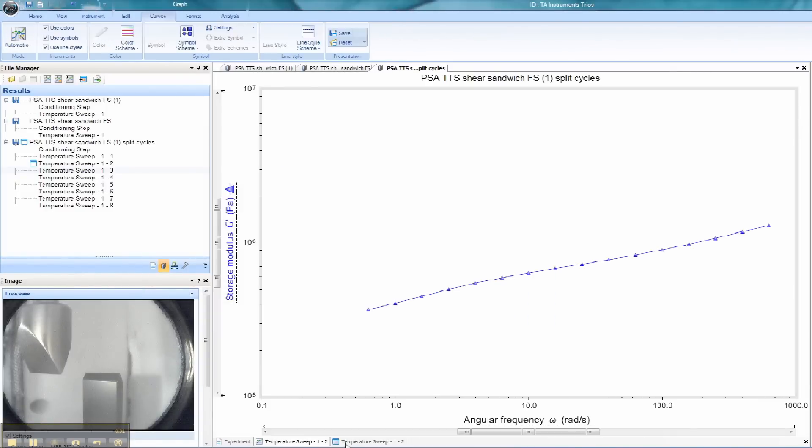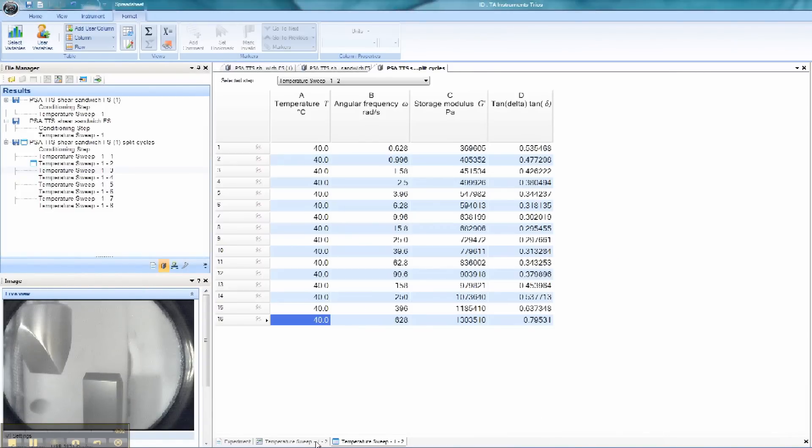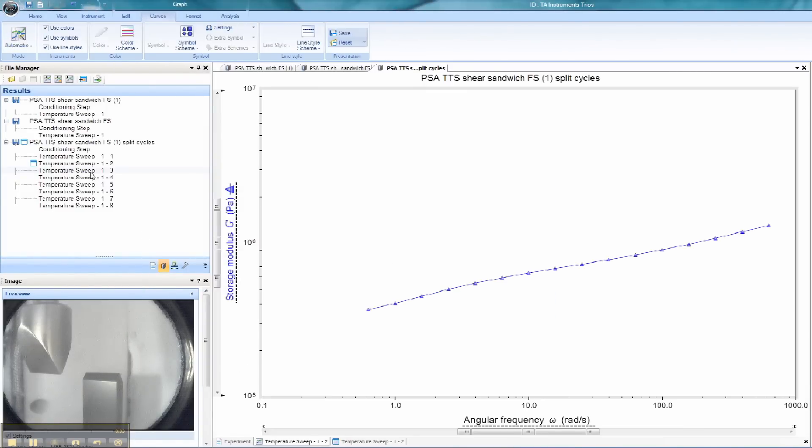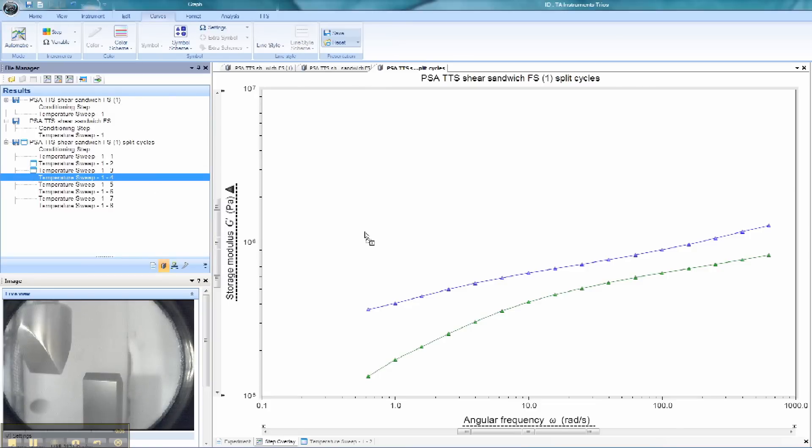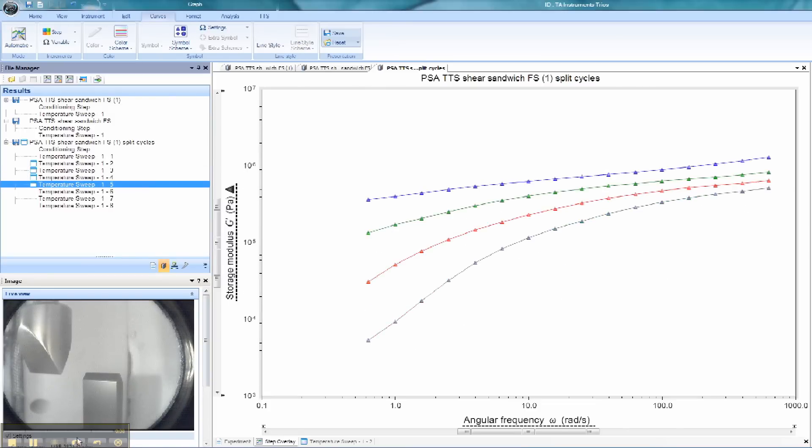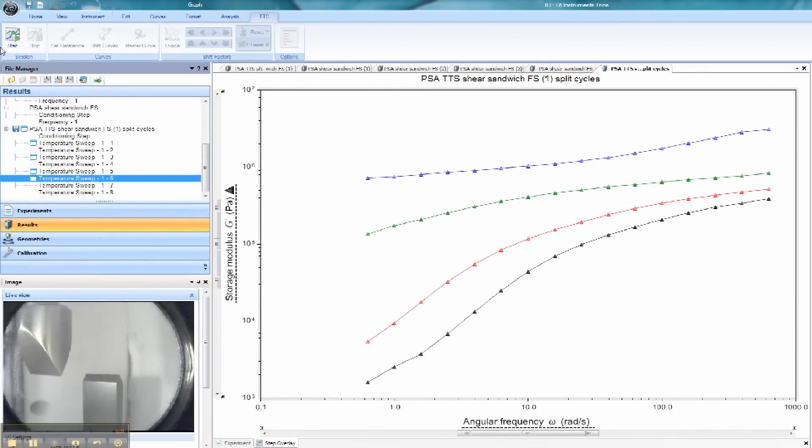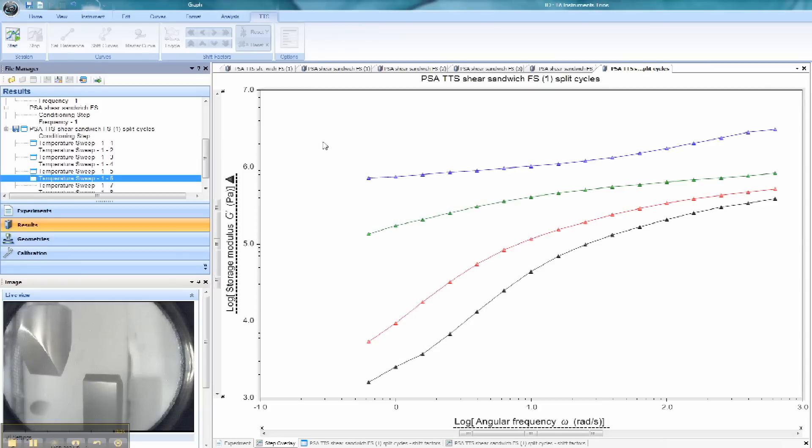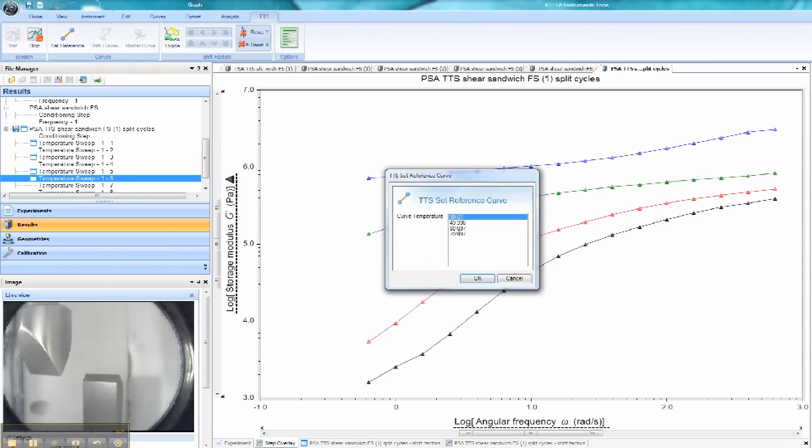TRIOS software allows you to easily switch between tabular and graphical data. Overlay plots are easily created by dragging and dropping experiment results into the result display area. TRIOS comes standard with a wide variety of data analysis options, including the popular time-temperature superposition for master curve generation.